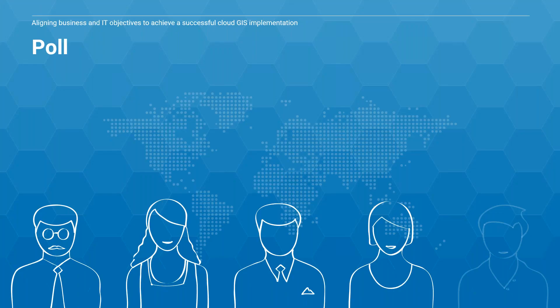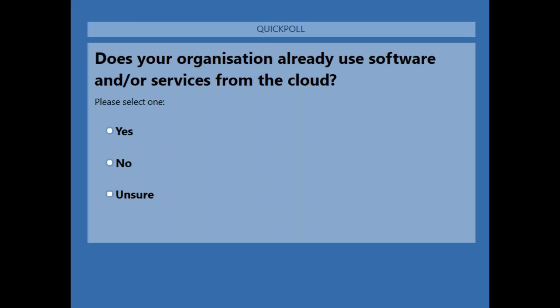To be a little interactive to begin with, we're going to start with a poll. Does your organization already use GIS software and/or services from the cloud? About 80% said yes and 15% no — so a lot of your organizations are already using some or many services from the cloud.